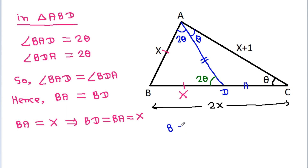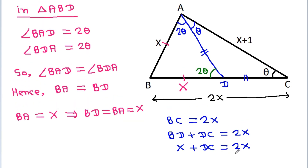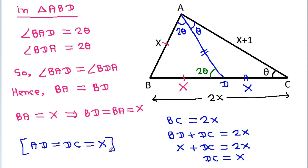BC is 2x, and BC is BD plus DC, that is 2x, and BD is x plus DC that is 2x. So DC will be x. DC is x, and AD is equal to DC, that will be x. AD will be x.